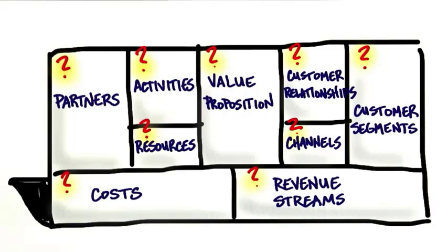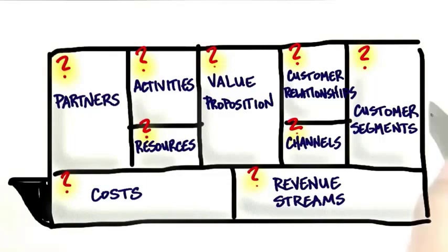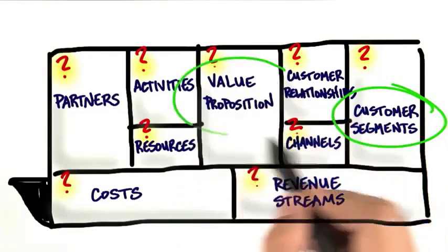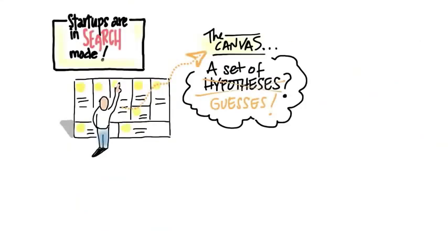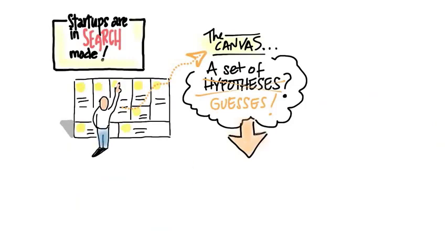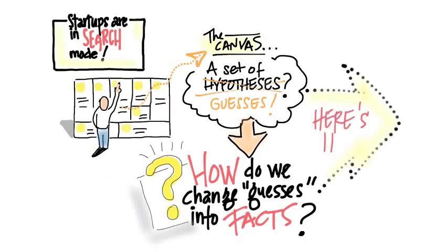What's great about the business model canvas is it allowed us to organize our thinking around a series of thoughtful first guesses about who we think our customers are, what products we're making for them, and how much we're going to charge. You could sit around all week in your conference room figuring out what those are, but the odds are you're probably wrong. But it's a great first starting point. The question is, how do we change those guesses into facts?